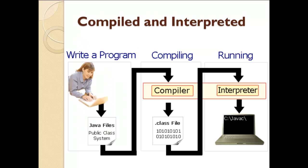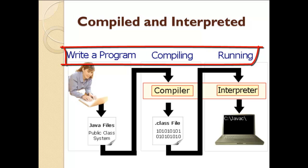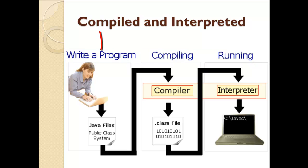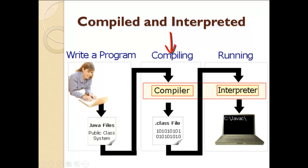Our first feature is compiled and interpreted. To get output from any program we need to follow three basic steps: first we write the program, then we compile it, and after that we run or execute it. For writing our program we write Java code and save it in a .java file, and after that we compile the file. When we compile the file, the compiler gives us a .class file.